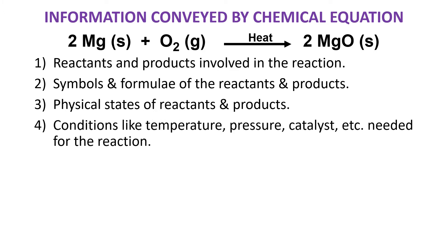Fourthly, it tells you the conditions like heat, temperature, pressure, catalyst, etc., which are needed for bringing about the reaction. As in this case, we need to heat the magnesium ribbon or burn it. So that condition — heat — is mentioned on the arrow in the equation.